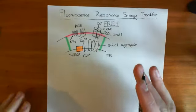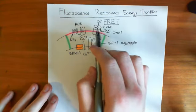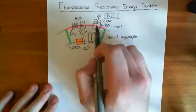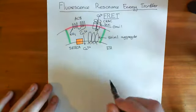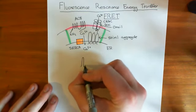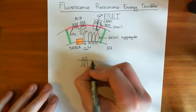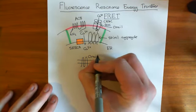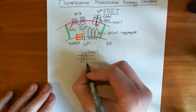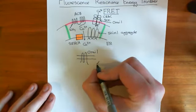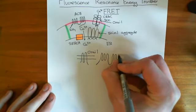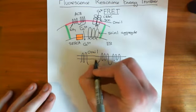This is the principle of FRET. We'll first use it to show that the CRAC channel — the ORAI1 protein — is connected to adenylyl cyclase 8. The membrane-spanning structure of ORAI1 is that it has four transmembrane domains, four membrane-spanning alpha helices. It is linked to adenylyl cyclase 8 at the amino terminus of adenylyl cyclase 8, sitting in the phospholipid bilayer. The carboxyl terminal of ORAI1 adjoins the amino terminal of adenylyl cyclase 8.